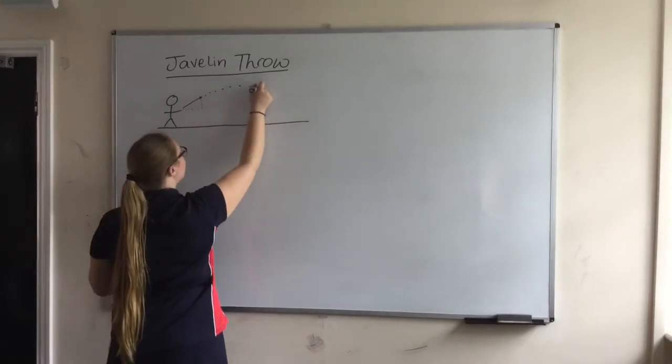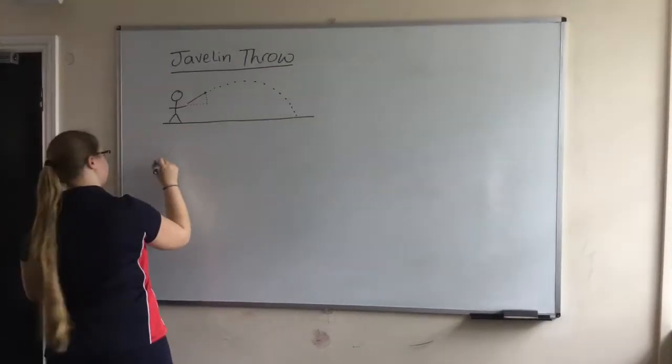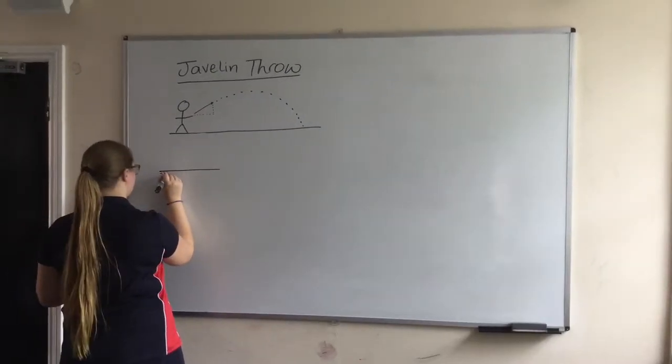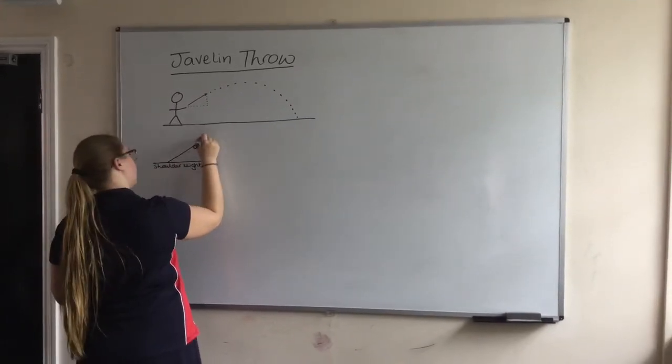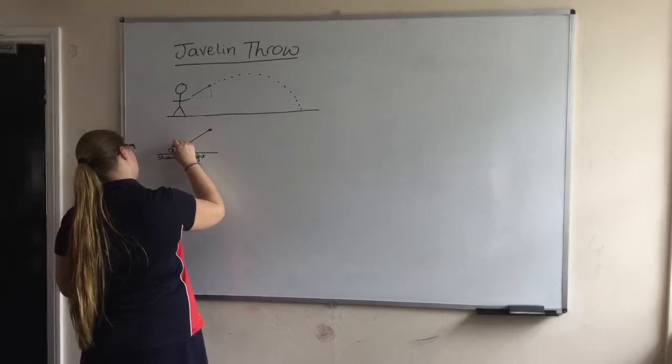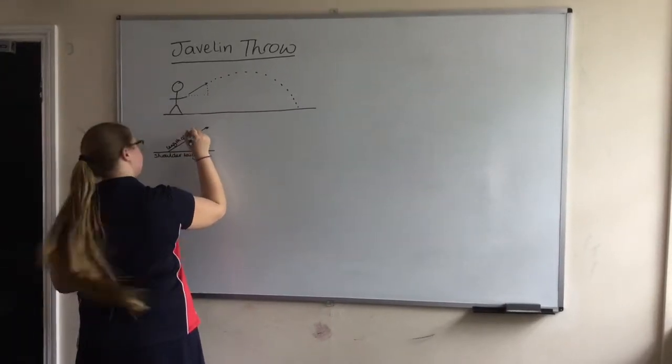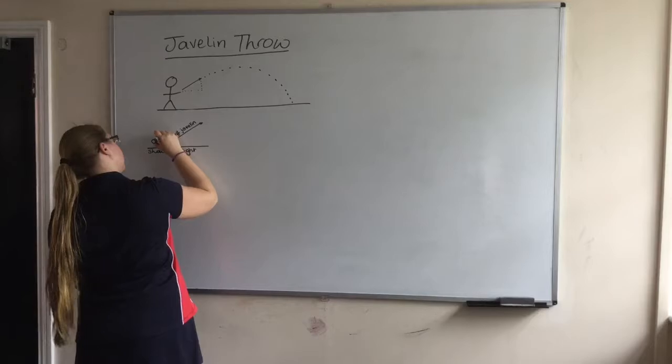There are obviously other factors that need to be taken into consideration. For example, the speed and the javelin thrower's height. But in this clip, we are literally going to look at the angle.